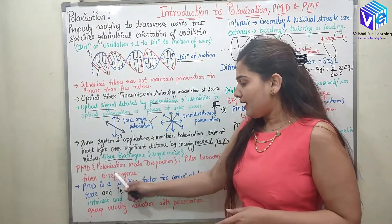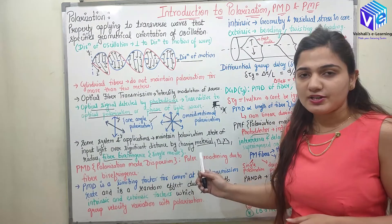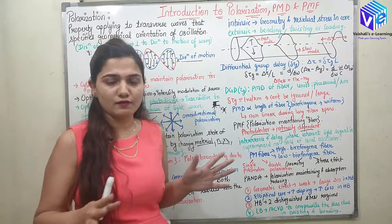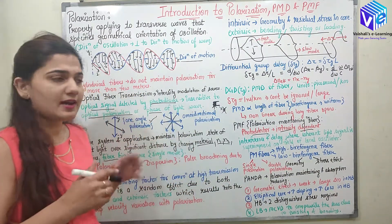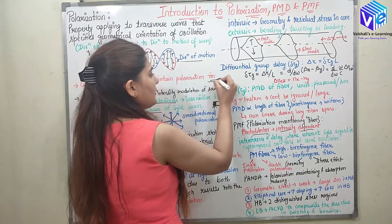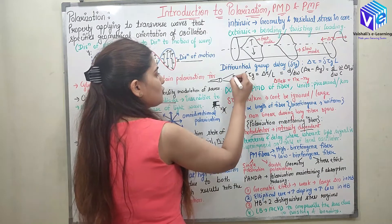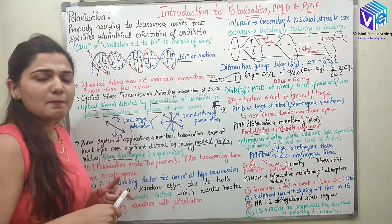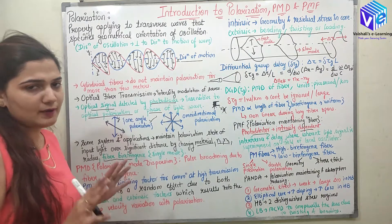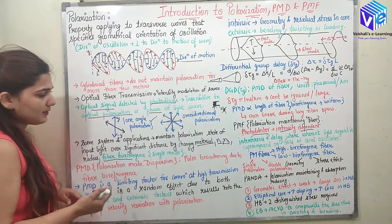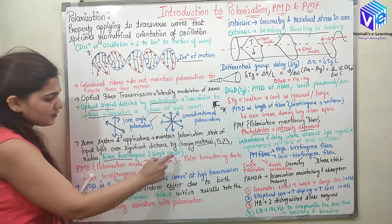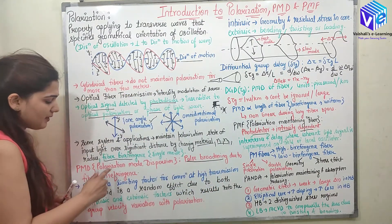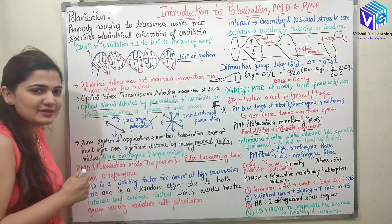Now coming to PMD — polarization mode dispersion. We know dispersion means the broadening of the light pulse. When a light wave is traveling, it is going to get broadened out. With polarization also, this dispersion phenomenon would be observed, which is called polarization mode dispersion. PMD results in pulse broadening due to fiber birefringence.